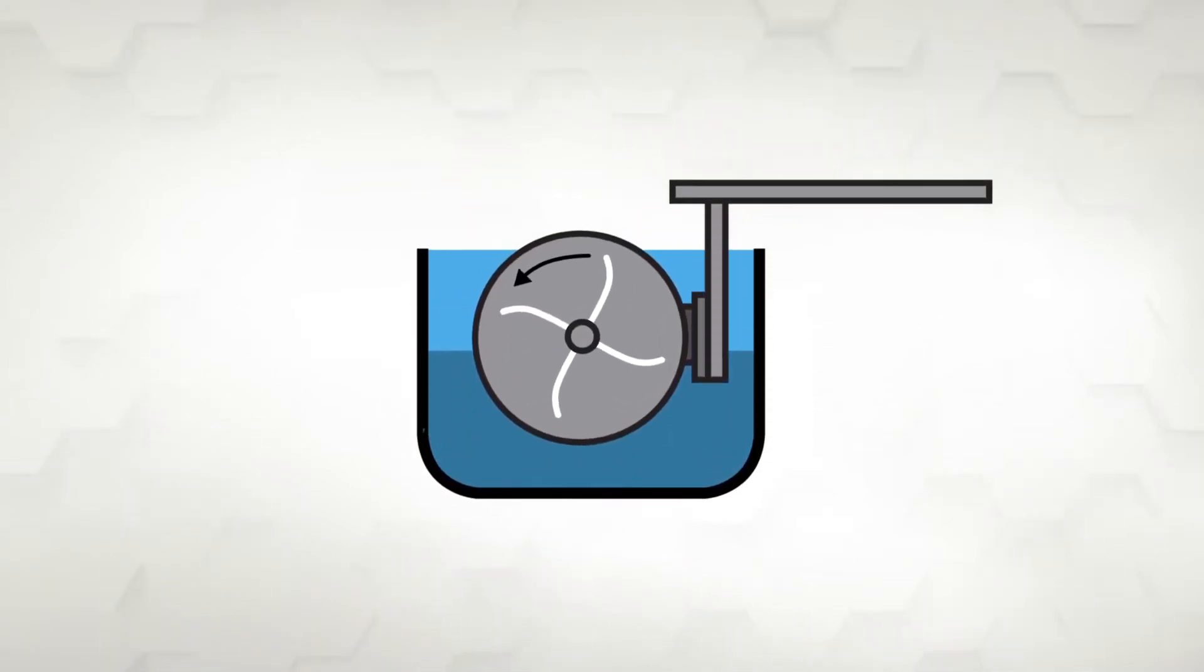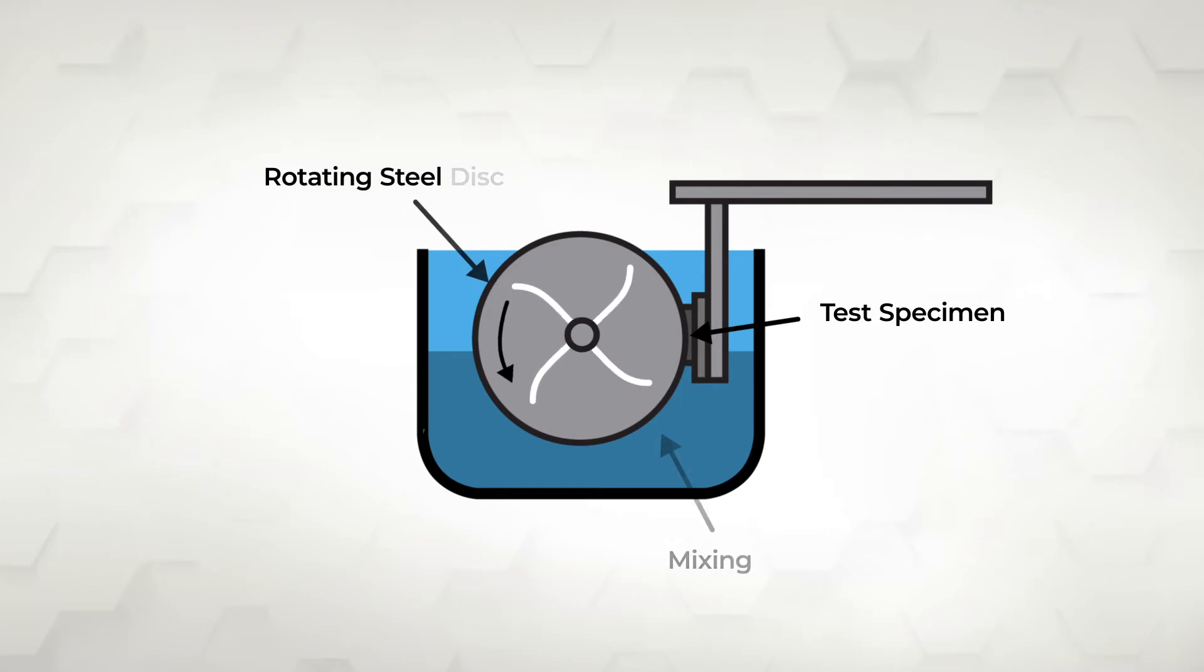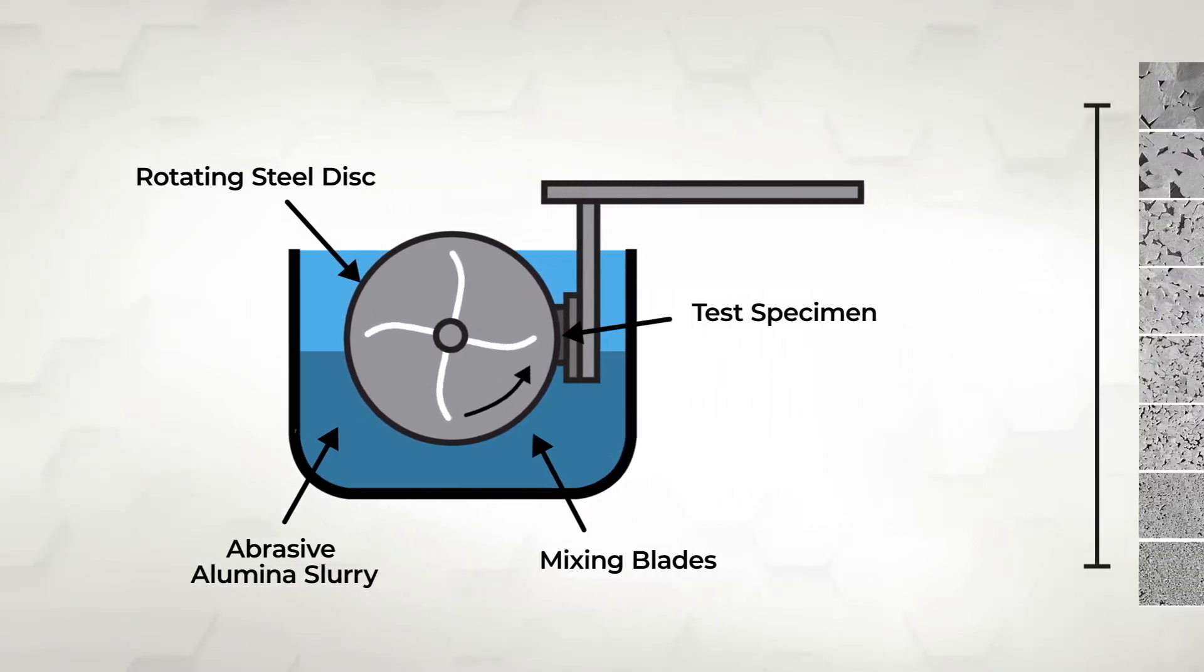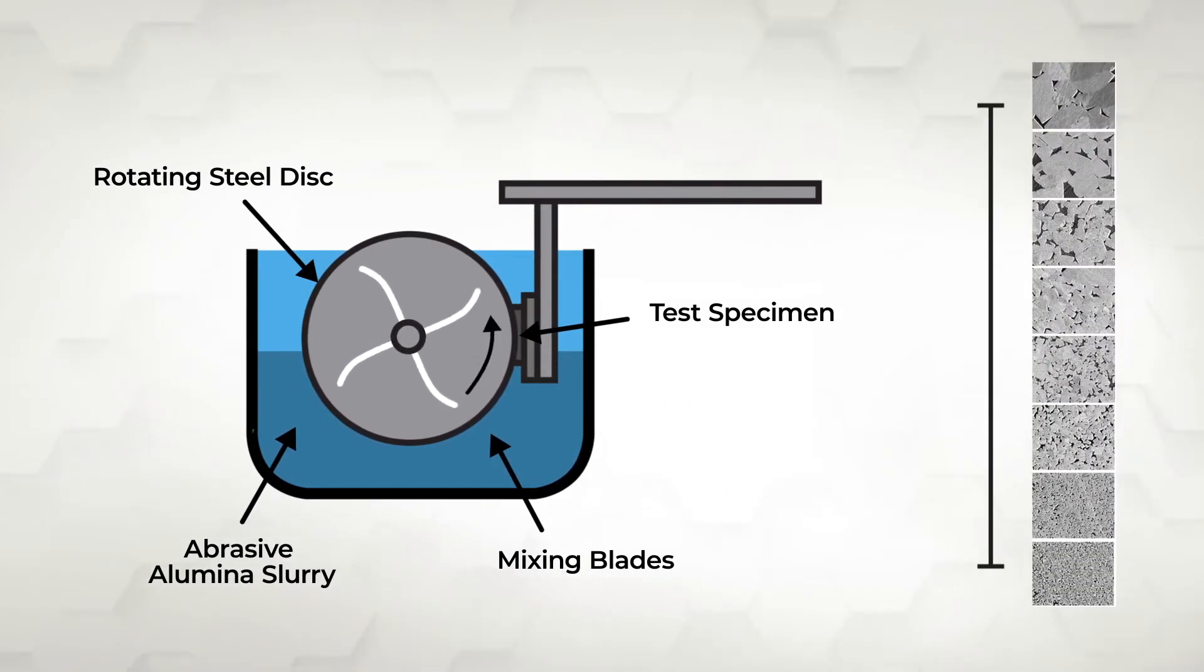During this type of wear test, the test sample is pressed against the periphery of a rotating disk, partly immersed in a slurry of alumina particles in water. The abrasive wear resistance is influenced by the properties of the cemented carbide, like the cobalt content and the tungsten carbide grain size.